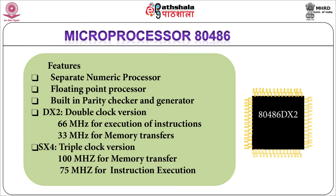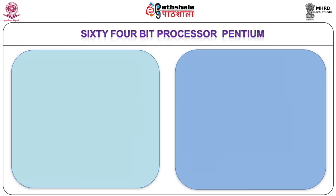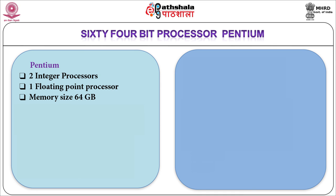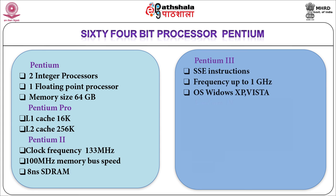The next processor was named Pentium instead of 80586. It consists of two integer processors supporting parallel processing — known as superscalar architecture — one floating point processor, two separate level-1 cache memories (one for instructions and another for data), a paging unit, virtual memory, parity checker and generator, and branch prediction logic. It is available in versions: Pentium, Pentium Pro, Pentium 2, Pentium 3 and Pentium 4.